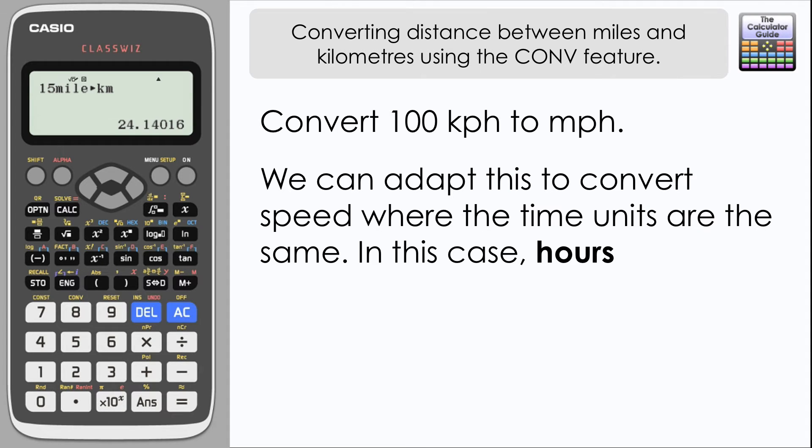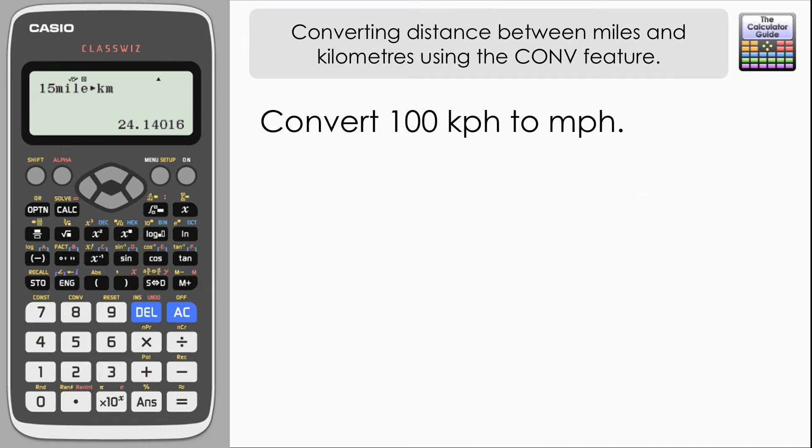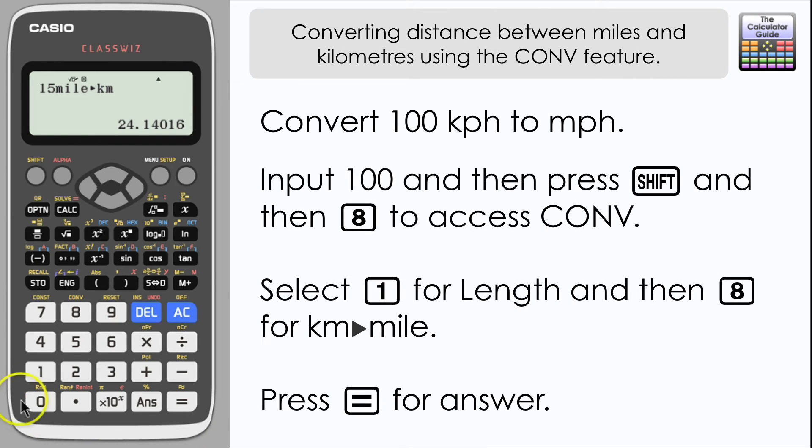Since both units of time are the same—they're both in hours—the conversion feature between kilometers and miles should work. We're going to convert 100 kilometers per hour to the equivalent speed in miles per hour.